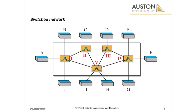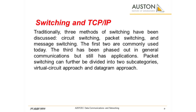A network is a set of connected devices. Whenever we have multiple devices, we have the problem of how to connect them to make one-to-one communication possible. The solution is switching. A switched network consists of a series of interlinked nodes called switches. Traditionally, three methods of switching have been discussed: circuit switching, packet switching, and message switching. The first two are commonly used today; the third has been phased out in general communications but still has applications. Packet switching can further be divided into two subcategories: the virtual circuit approach and the datagram approach.